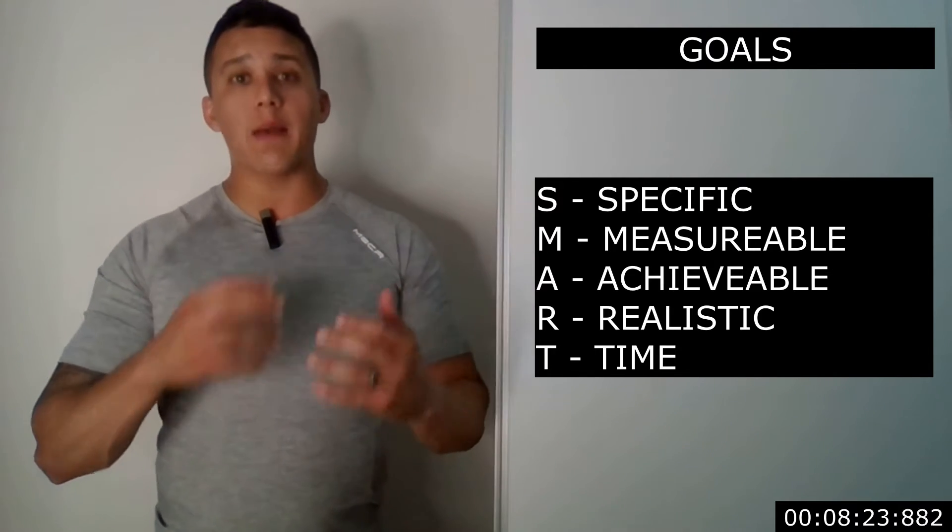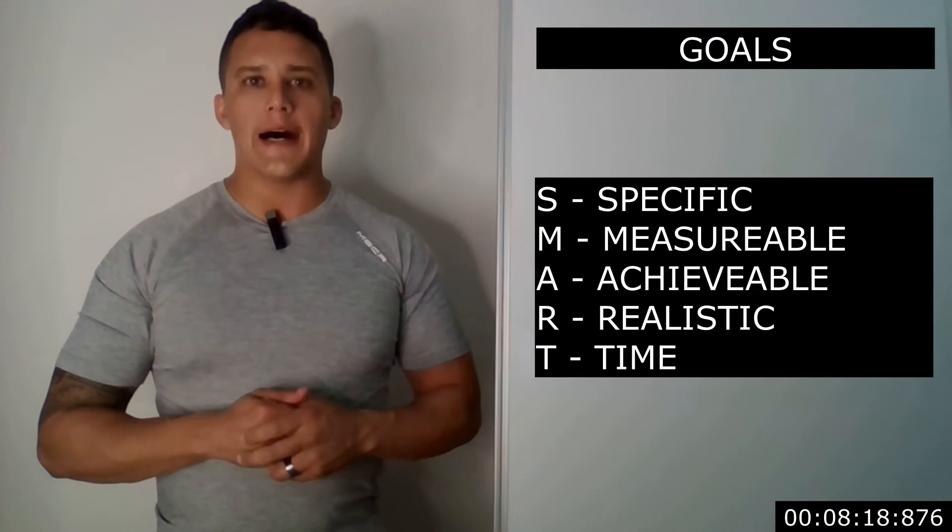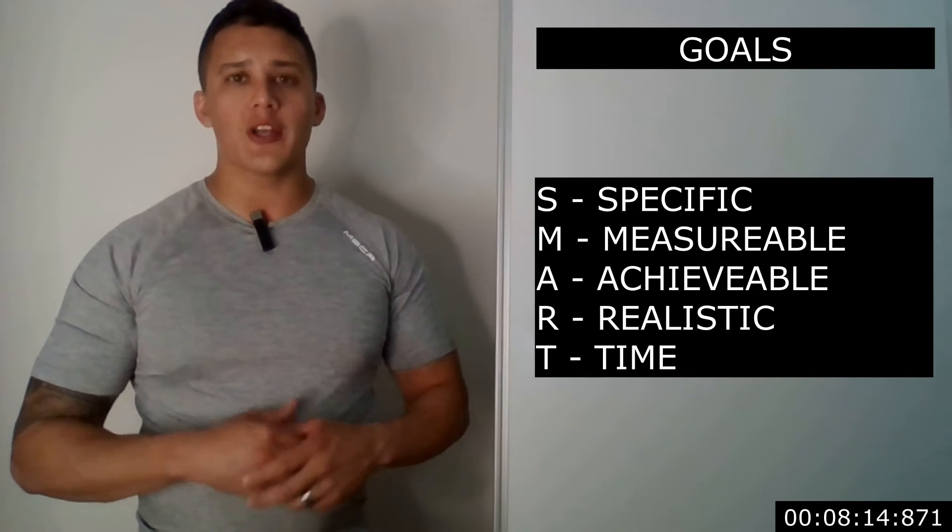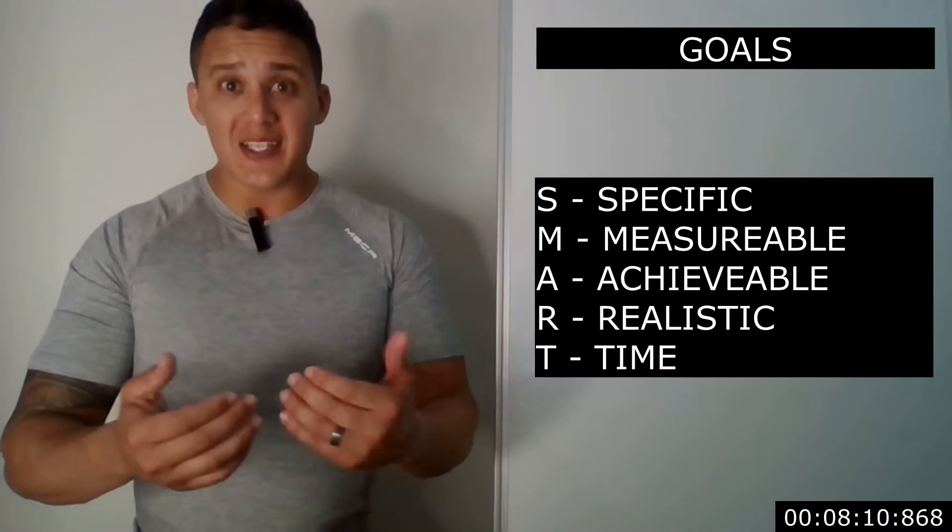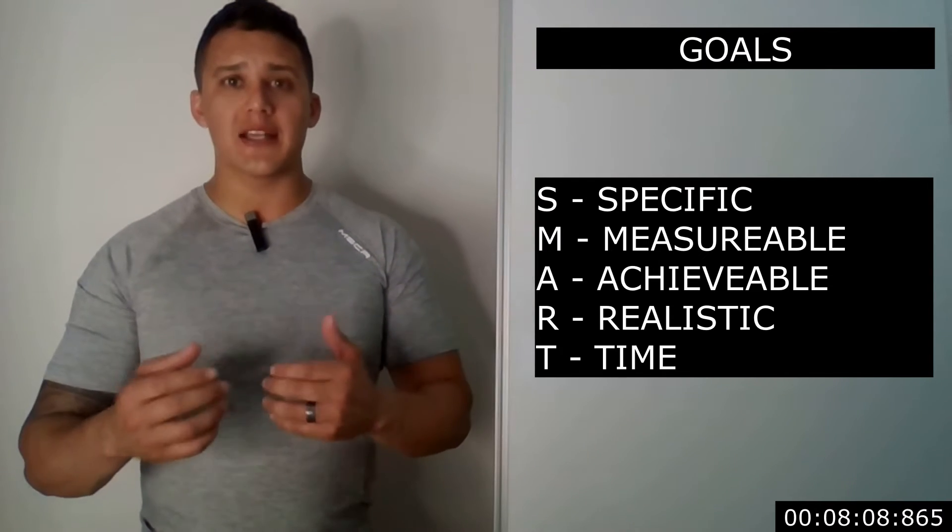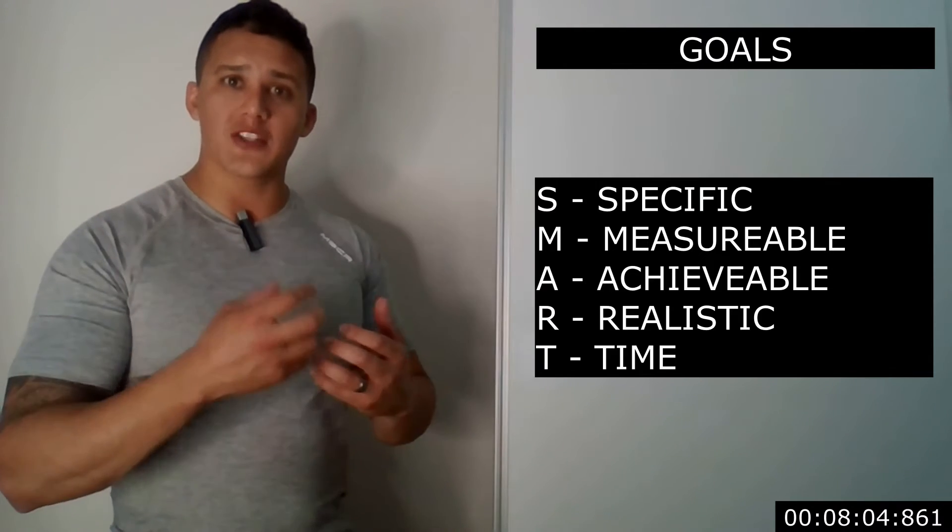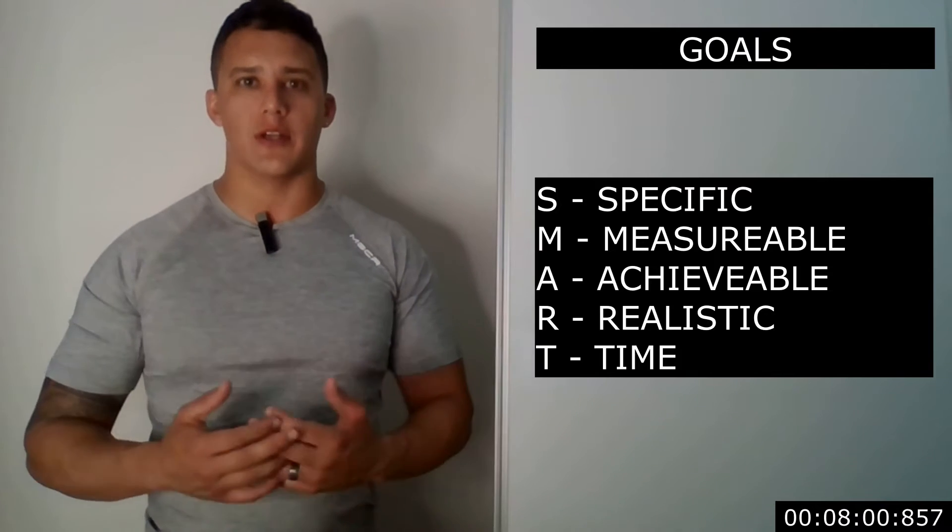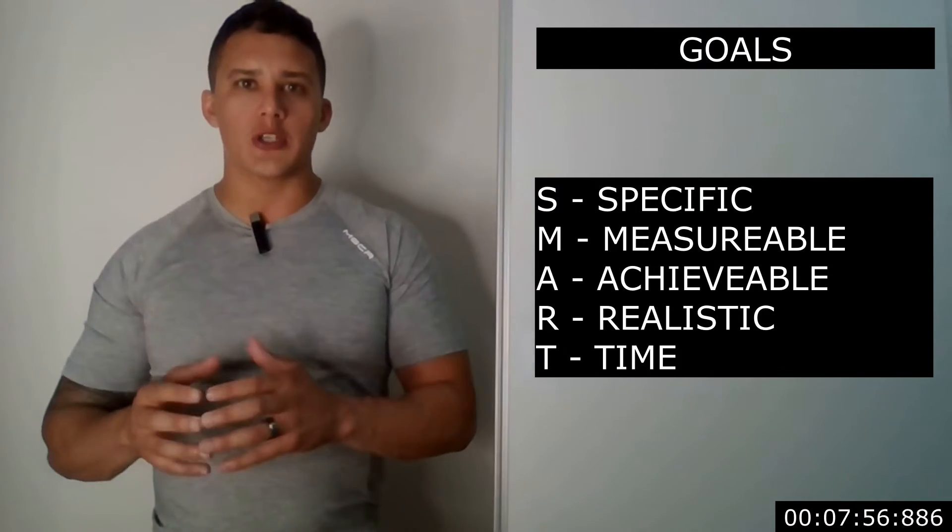A, we want it to be achievable, we want to be able to actually achieve it. We don't want to be setting out these massive goals where we can't actually achieve it due to our lifestyle. R is realistic, can we see ourselves actually achieving it with the lifestyle that we do have. And the last one is time, do we have a timeframe around it to give us a little bit of urgency.